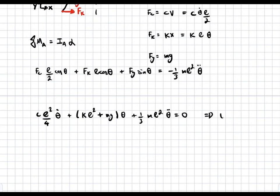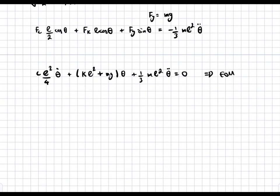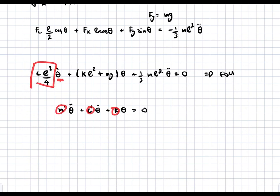This is our equation of motion. Based on this, we can determine the effective damping coefficient, spring coefficient, and mass. Equations of this form are written as m'·theta-double-dot + c'·theta-dot + k'·theta = 0, and we get the effective coefficients by reading off the terms in front of each derivative. With these, we can calculate the natural and damped frequencies.